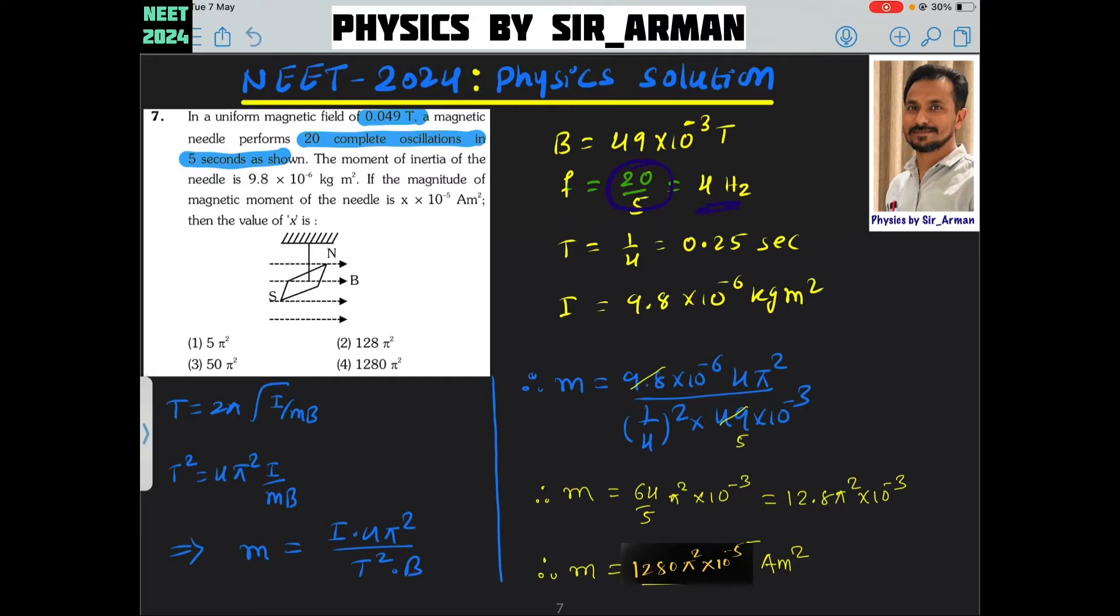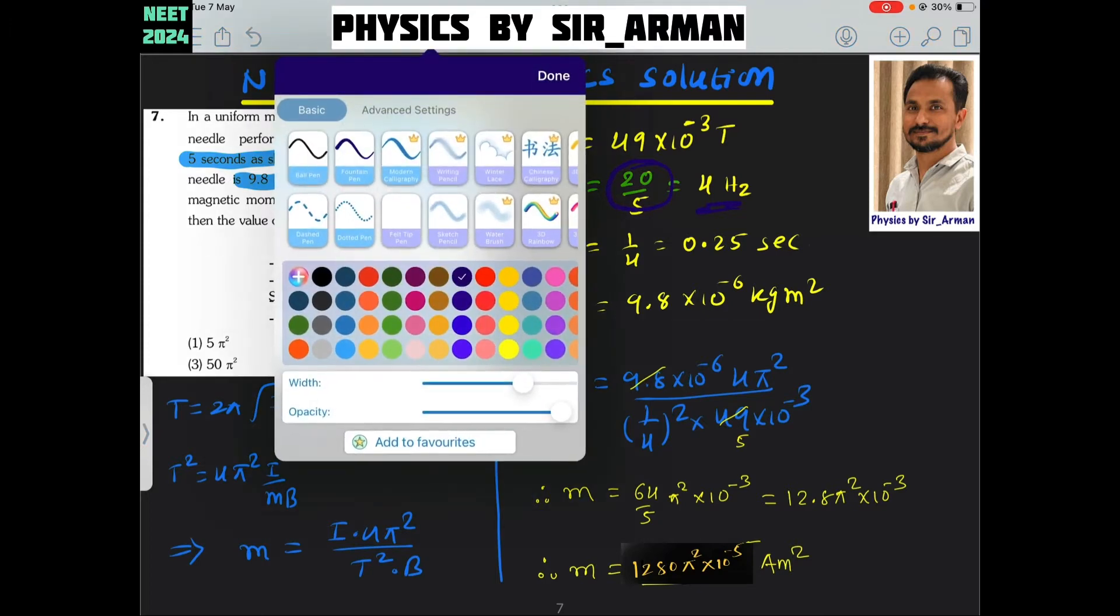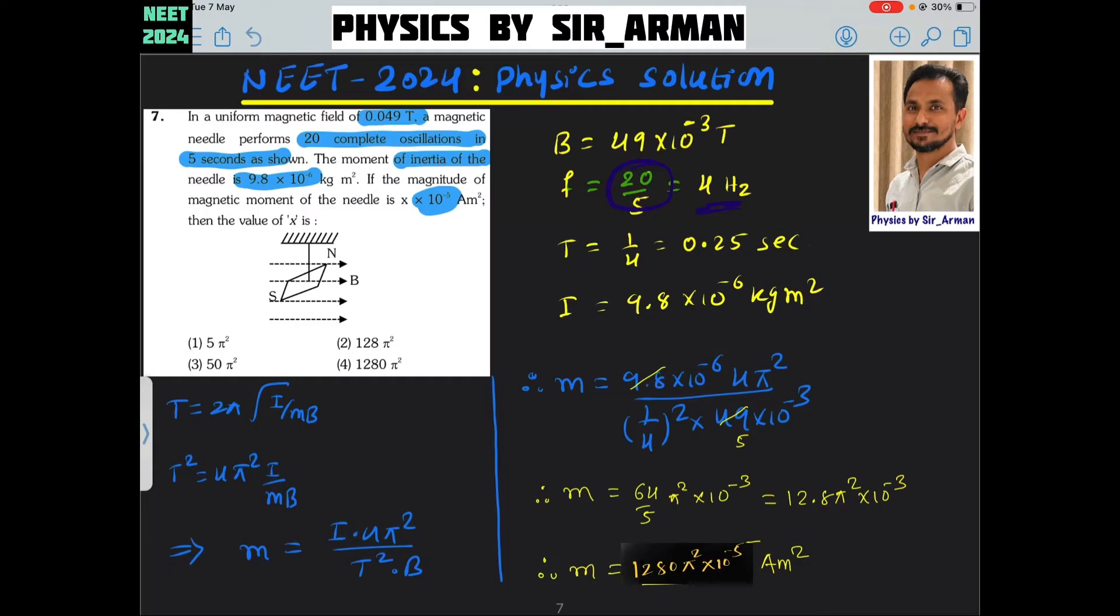Then it is given the moment of inertia of the needle. If the magnitude of the magnetic moment is x into 10 raised to minus 5, then the value of x is what we need to find. Now see, whenever it is asked the magnetic moment and oscillation, both are connected. So there is one equation in our textbook which is t equals 2 pi under root i by mb. This equation perfectly matches with the given data.